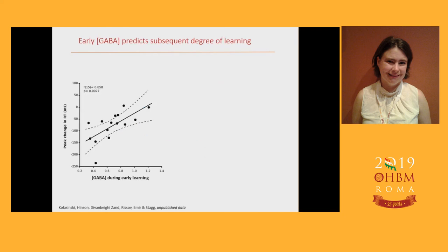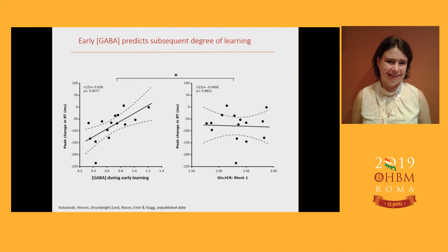Can we go further? We can look at relationships between GABA levels in that first block and see if they predict how much people learn on a subject-by-subject basis — and indeed they do. We can also look at neurochemical specificity: is this just true of inhibition and excitation generally, or is it something very specific about the amount of inhibition? We use glutamate as our neurochemical control, and we see that GABA concentration early on predicts how much you learn on a subject-by-subject basis, but that is not true of glutamate.